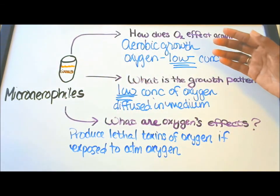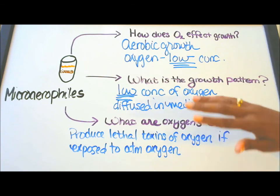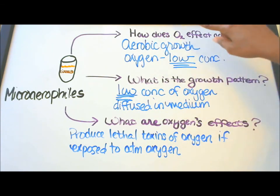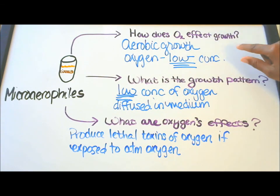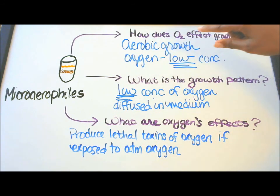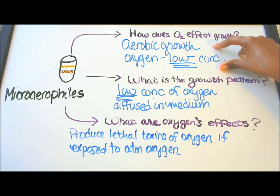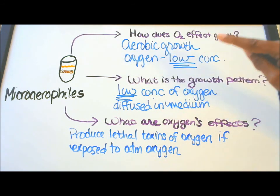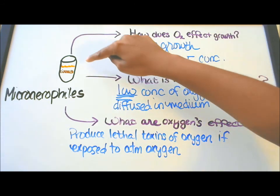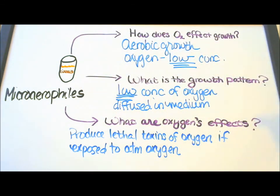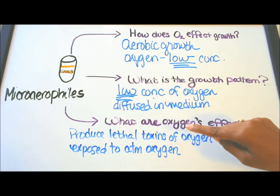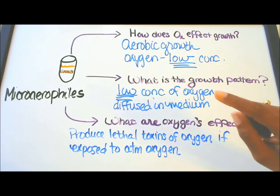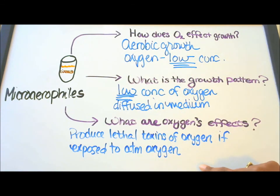Microaerophiles — it's kind of a love-hate relationship with oxygen. How does oxygen affect their growth? Their growth is aerobic; they can grow in the presence of oxygen but only at a very low concentration. What is their growth pattern? A low concentration of oxygen is diffused into the medium. What are oxygen's effects? They produce lethal amounts of oxygen toxins if exposed to atmospheric oxygen.